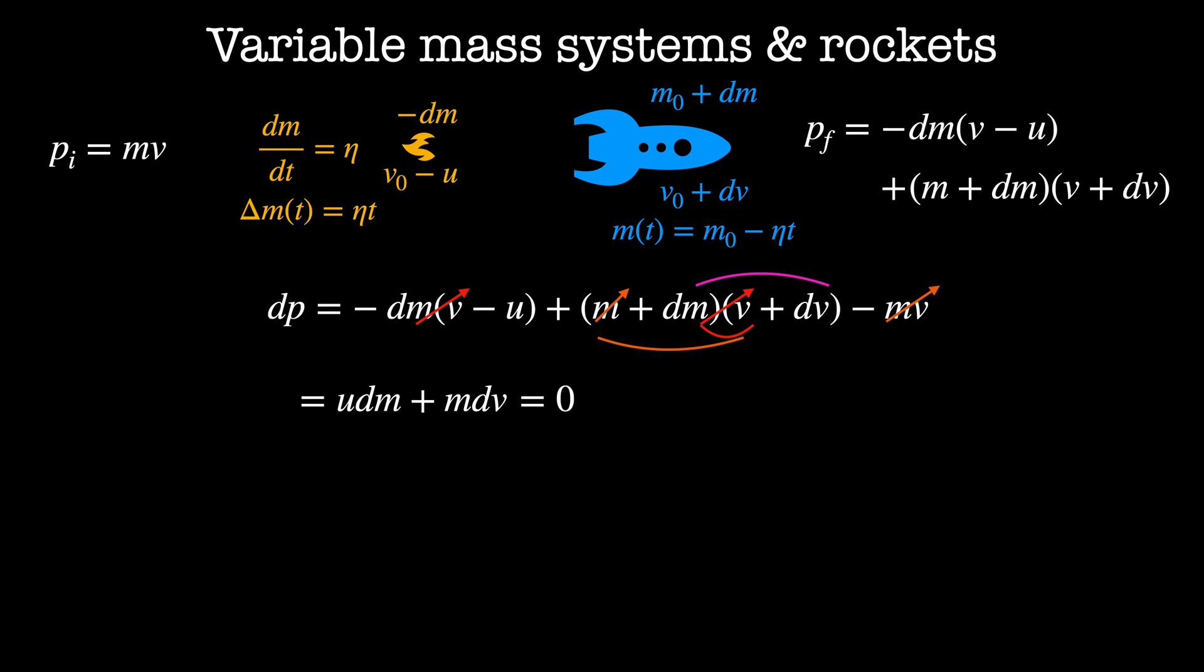This gives me a differential equation for velocity as a function of mass lost. dv by dm is equal to minus u divided by m. Now we can rearrange these terms and integrate. On the left-hand side, I'll integrate dv from the initial velocity v-naught to velocity as a function of mass lost v of m. And on the right-hand side, I get minus u times the integral from the initial mass m-naught to mass as a function of time m-naught minus eta t of dm divided by m.